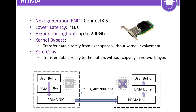Remote Direct Memory Access, also known as RDMA, is predicted to become more and more popular in modern data centers due to the dramatic improvement of performance. The newest generation RDMA NIC can support 200 gigabits per second bandwidth with ultra-low latency. RDMA is well known for its kernel bypass zero-copy tools as a crucial component for interconnecting resource blades.